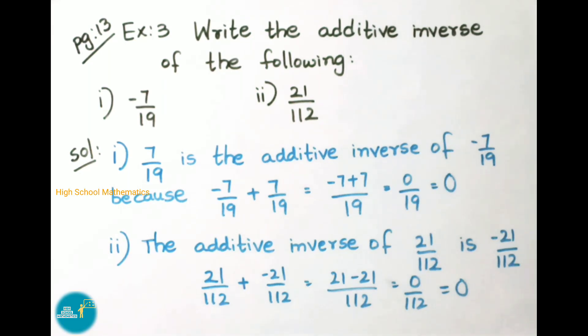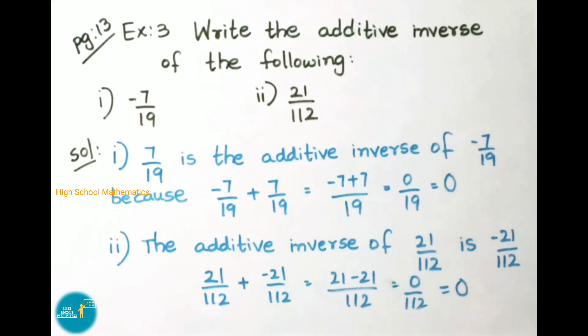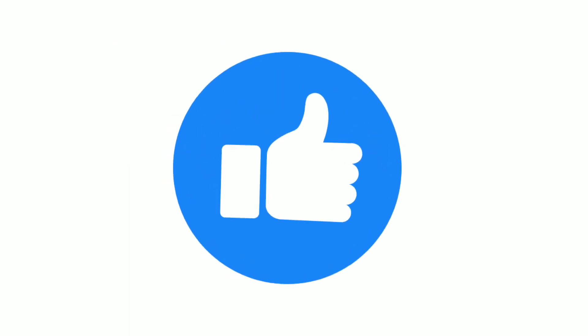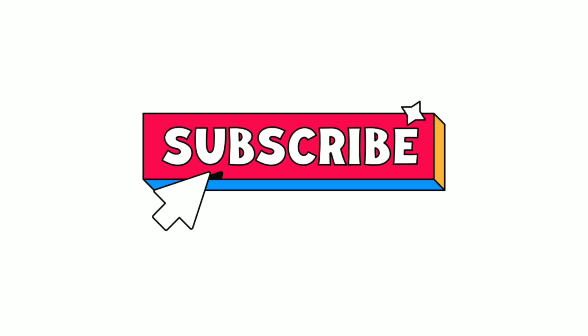Today we have seen class 8, chapter 1, rational numbers, new syllabus — what is a rational number, example sums 1 to 3, and try these sums. Hope you all like this video. If you like this video, please like, share with your friends, and subscribe to our channel. Thank you for watching.